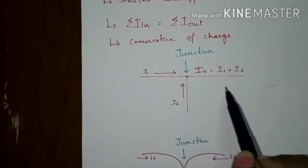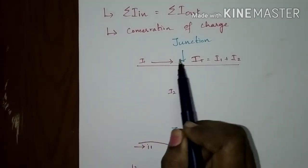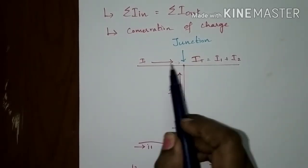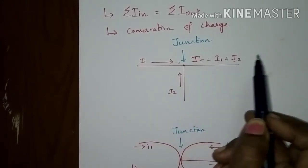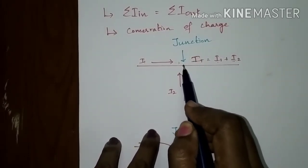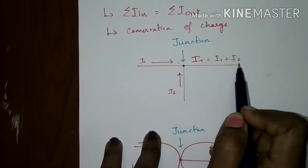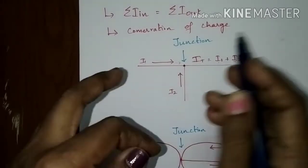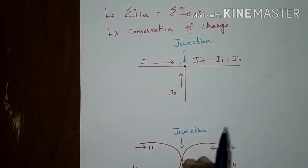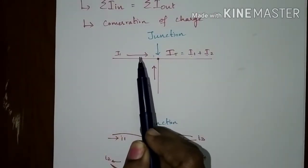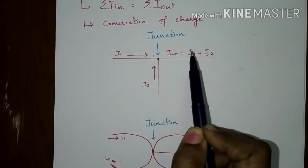Now let us look at a simple junction. This junction is termed a simple junction because it is formed by three branch elements. Here, the currents entering are I1 and I2, and the total current leaving is I1 plus I2. In this node, the current entering is I1 and I2, and the current leaving is I1 plus I2 — both are the same. The current entering is equal to the current leaving.